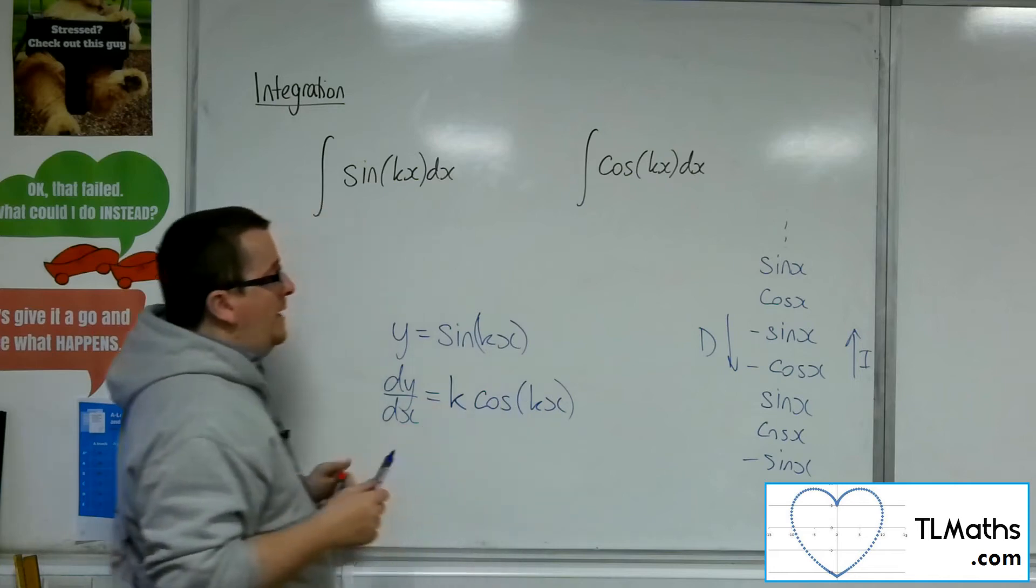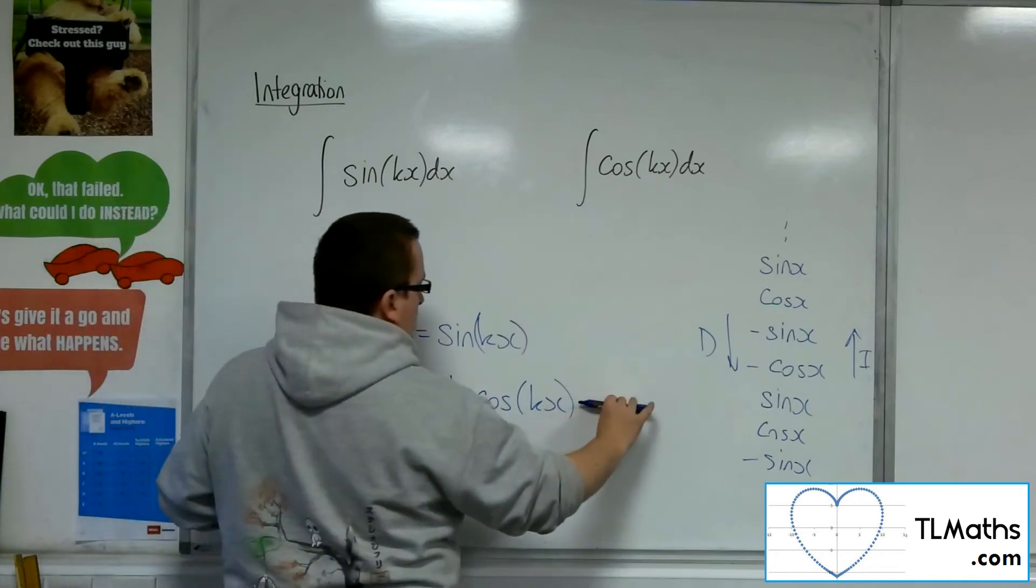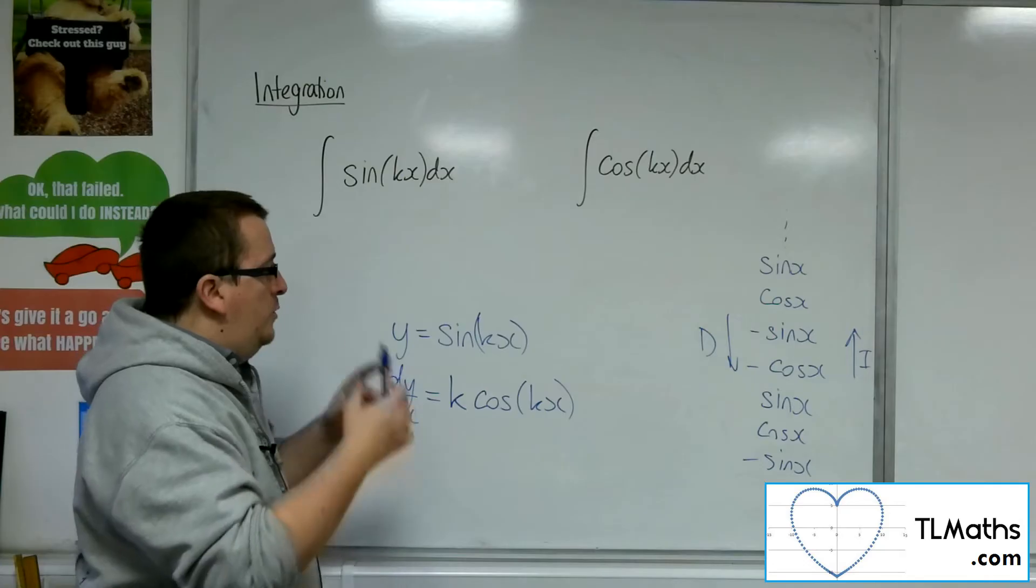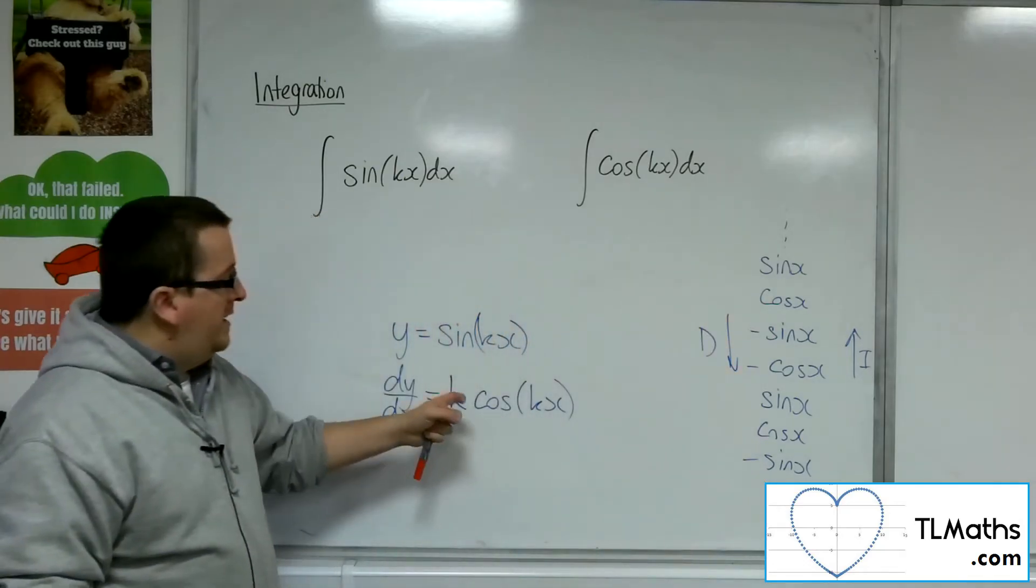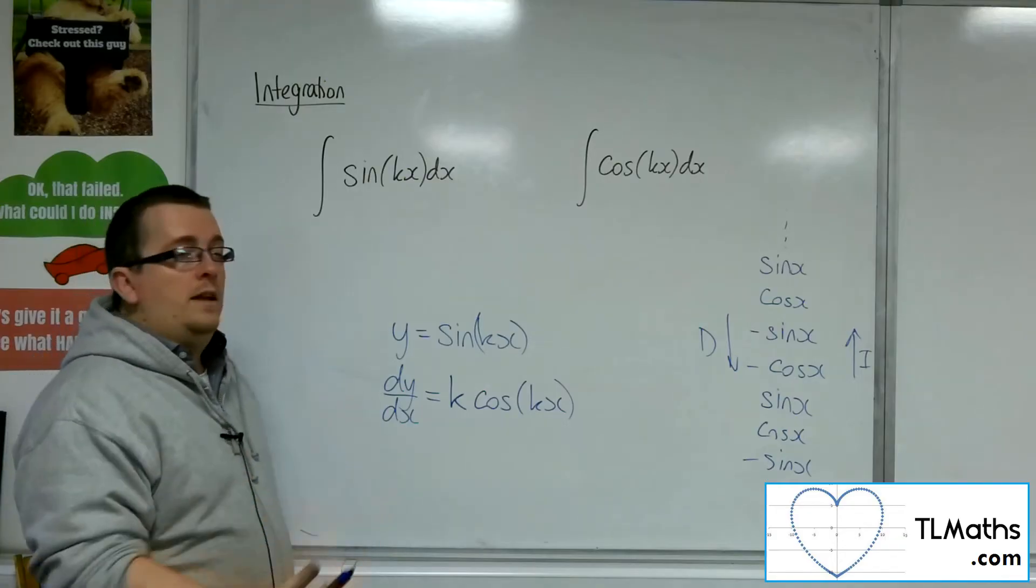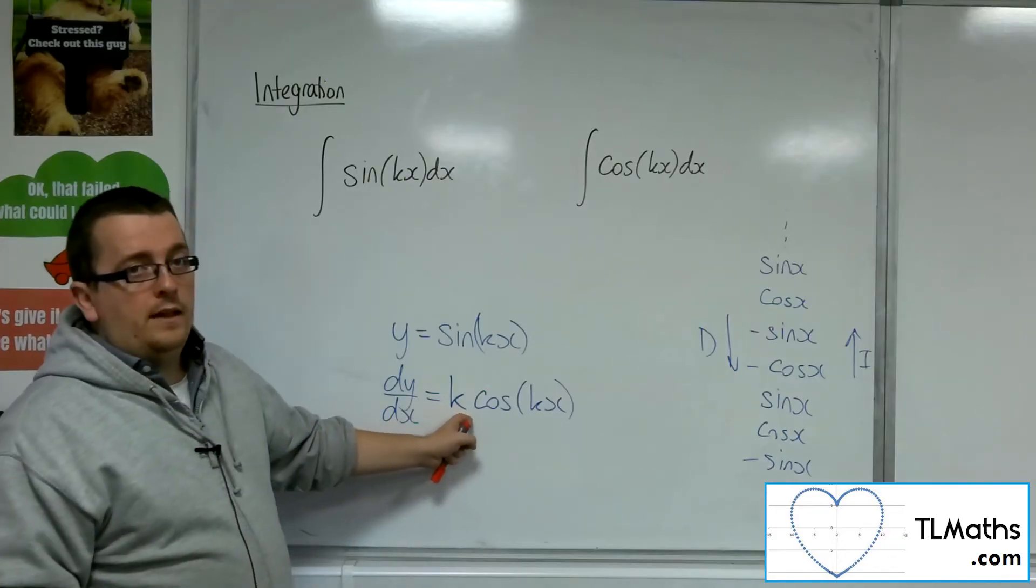So how do I integrate? Well, to get from that to that, I'm going to need to bring that cosine back up to sine, and I'm going to need to divide by k to knock out that k there.